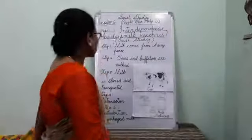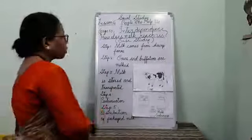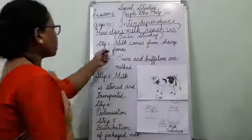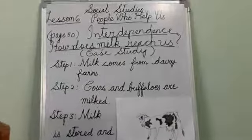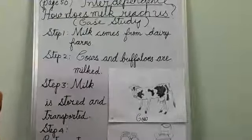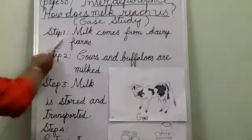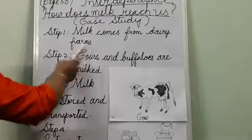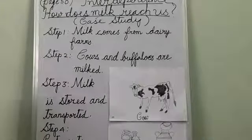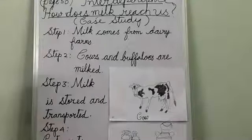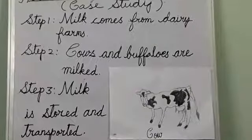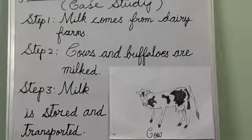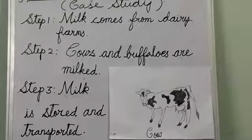Today we are going to take up a case study: how does milk reach us? There are various steps involved in this process. Step one: milk comes from dairy farms. Cows and buffaloes are raised in dairy farms, where they are fed with hay or grains and are also allowed to graze on fresh grass.